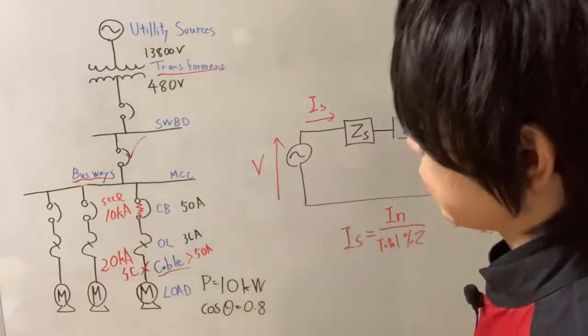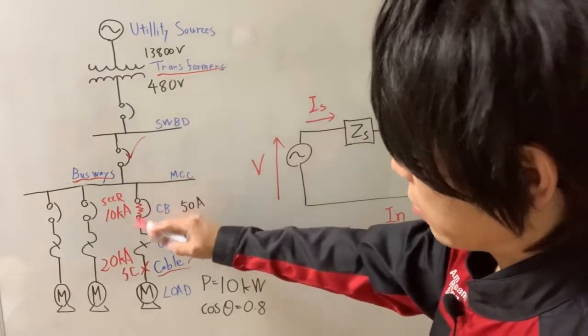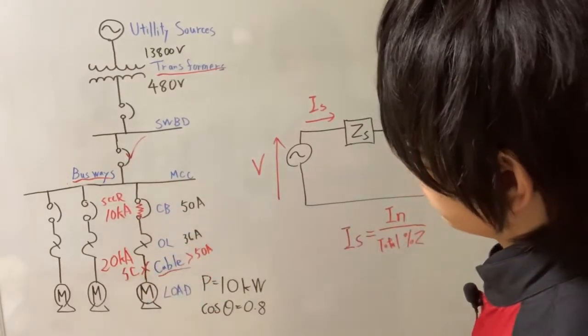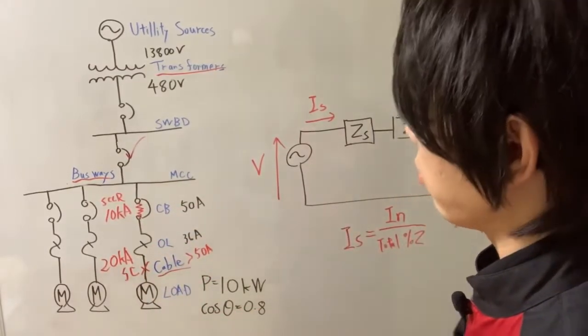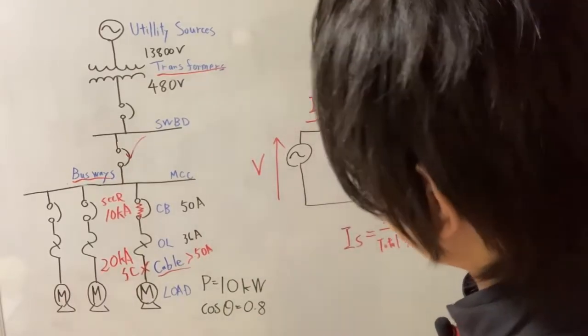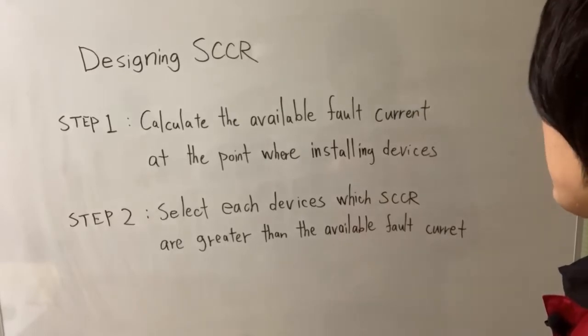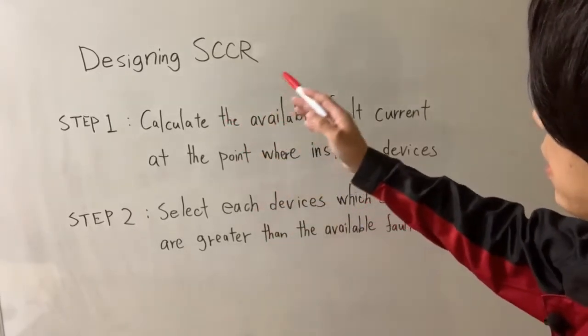So that is why this equipment SCCR should be greater than this maximum fault current, 20 kA. All right. So let me summarize the procedure of designing SCCR.